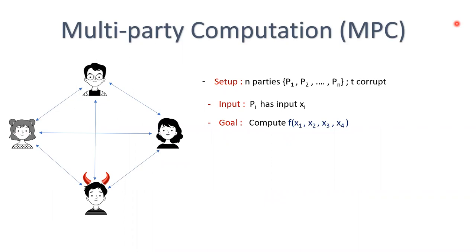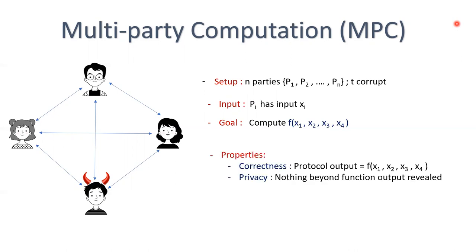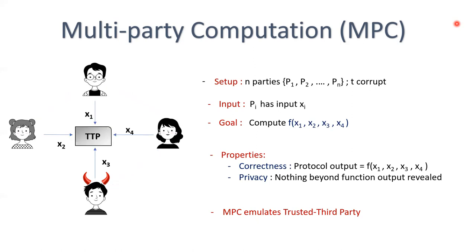Let us now begin with what secure multiparty computation, or MPC, means. Suppose we have a set of N mutually distrusting parties among which T are corrupt and controlled by an adversary. The goal is that these parties want to compute some combined function on their private inputs. MPC gives them a means to do so while ensuring two main properties: correctness, meaning everyone gets the correct function output, and privacy, meaning nothing beyond the function output will be revealed. In a nutshell, you can think of MPC as a protocol which emulates the effect of having a trusted third party to whom all parties could submit their inputs and get the output in return.